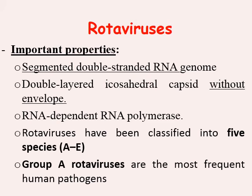Rotaviruses have segmented double-stranded RNA and they are non-enveloped. As a rule, all viruses that cause diarrhea disease or GIT infection are non-enveloped, because the envelope is sensitive to gastric acids — the acids will destroy an enveloped virus. As you remember from the viral replication cycle, double-stranded RNA viruses must have an RNA-dependent RNA polymerase enzyme. Rotavirus has been classified into five species, A to E, with Group A being the most frequent human pathogens.